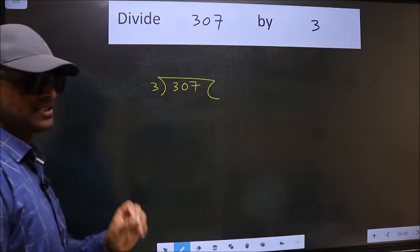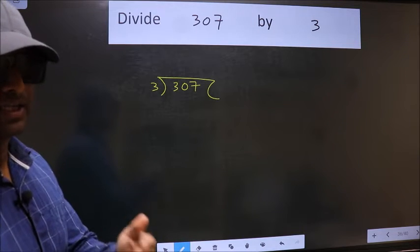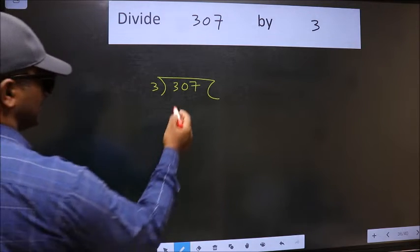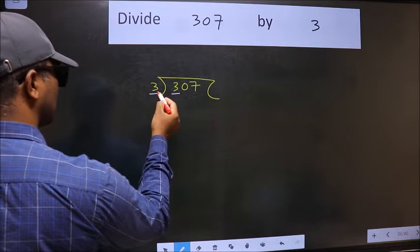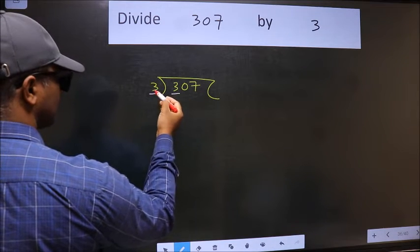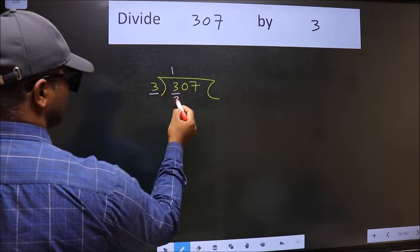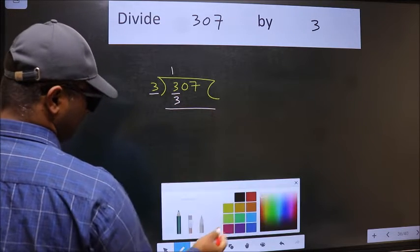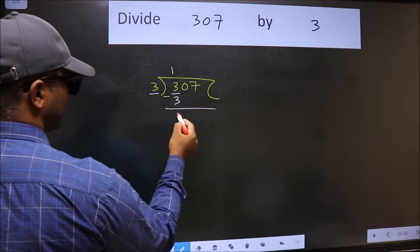This is your step 1. Next. Here we have 3. Here also 3. When do we get 3 in 3 table? 3 once 3. Now we should subtract. We get 0.